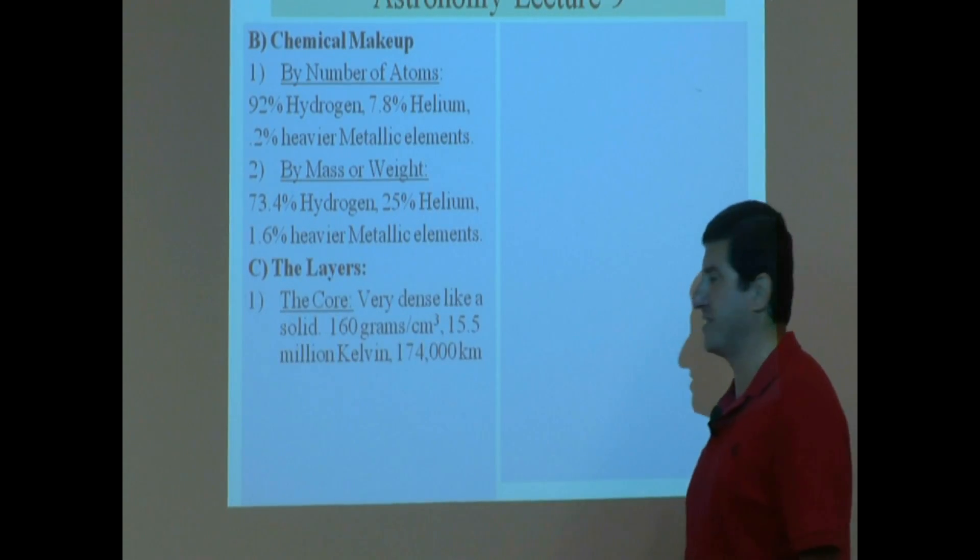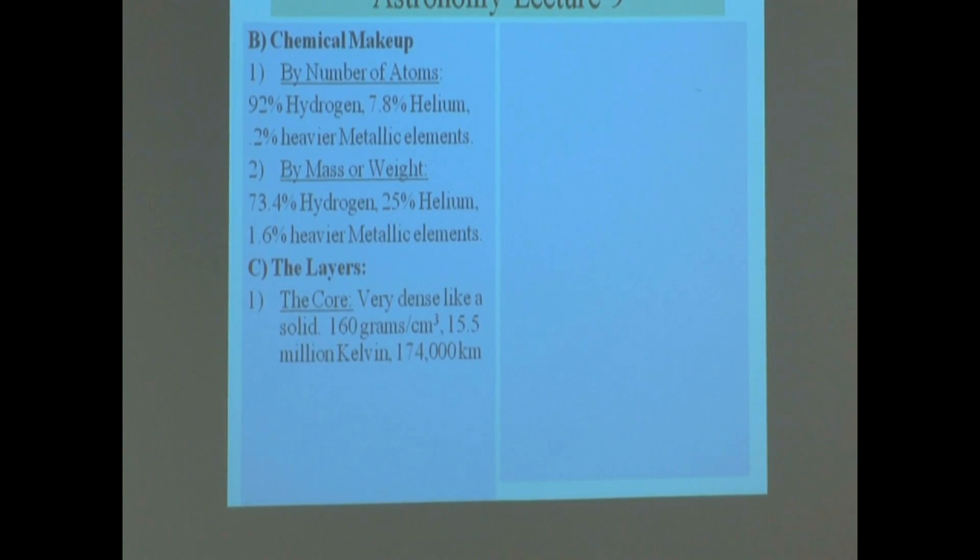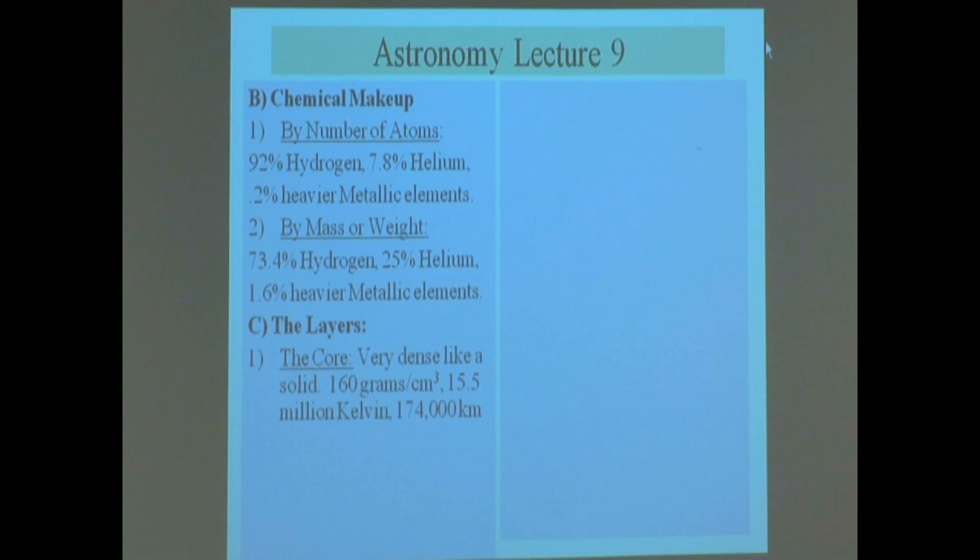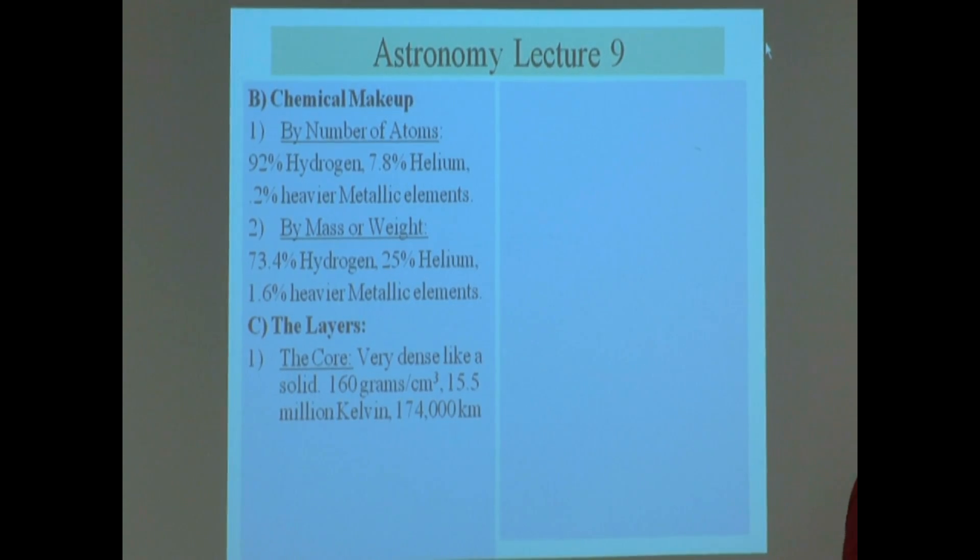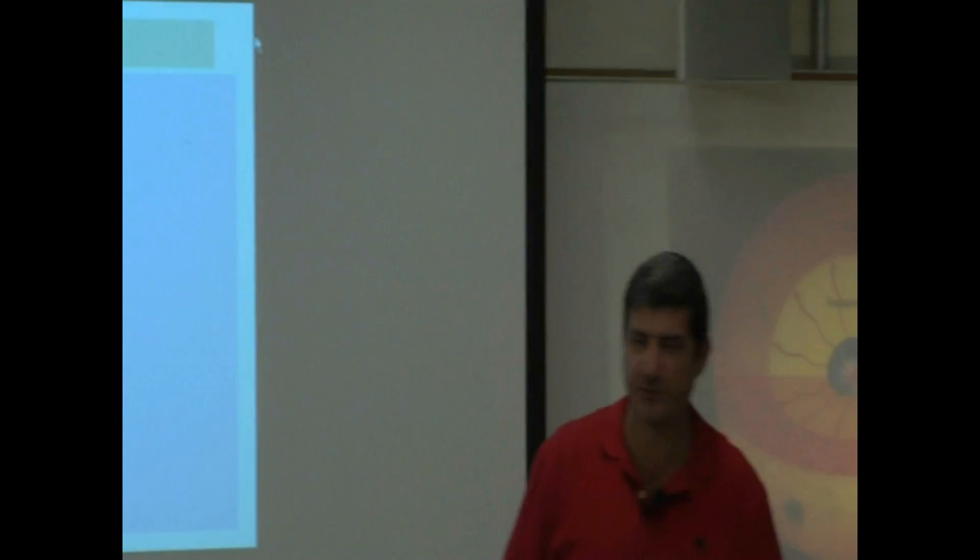Okay, the layers. Let's go inside the sun. The core of the sun is the most important, so I'm going to talk about the core also later on, because that's where the energy of the sun is made. That's where the magic takes place.